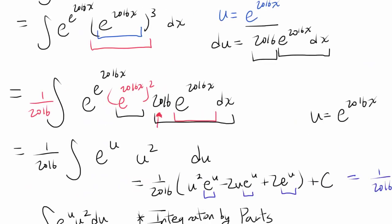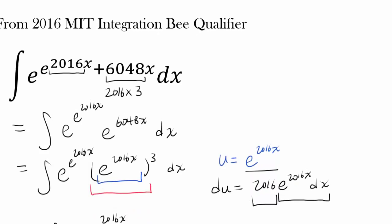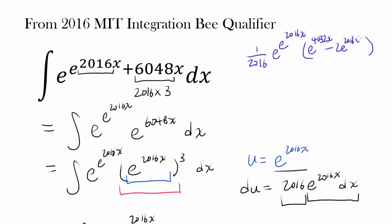So the answer to this question is 1 over 2016, times e to the e to the 2016x, times the quantity e to the 4032x, minus 2 times e to the 2016x, plus 2, plus C.